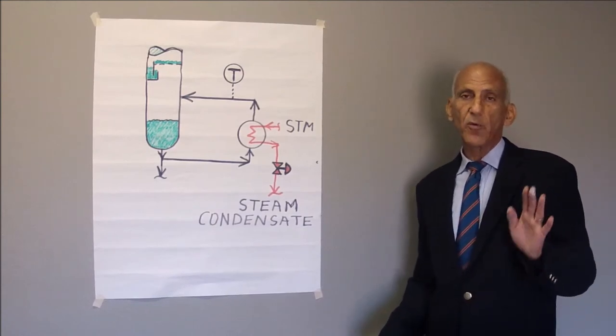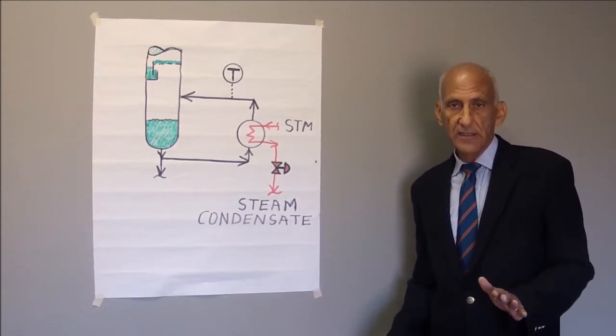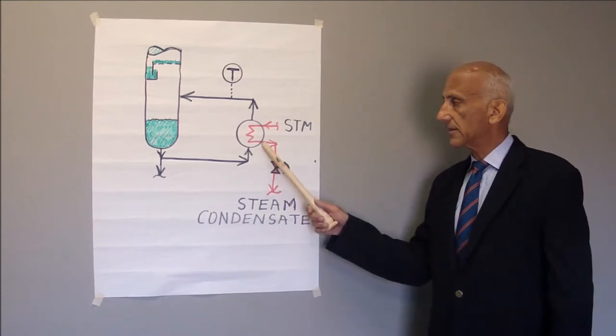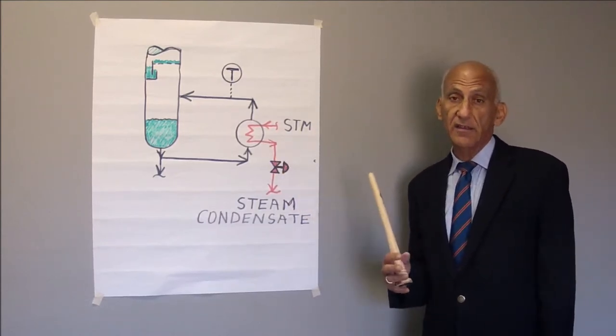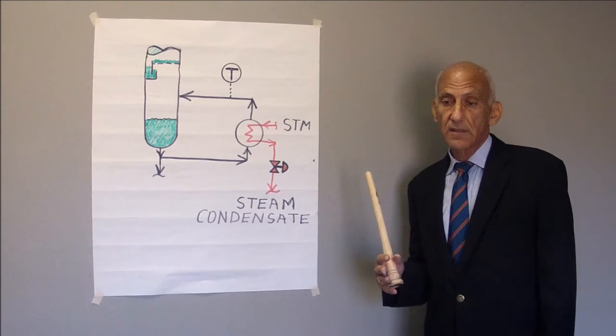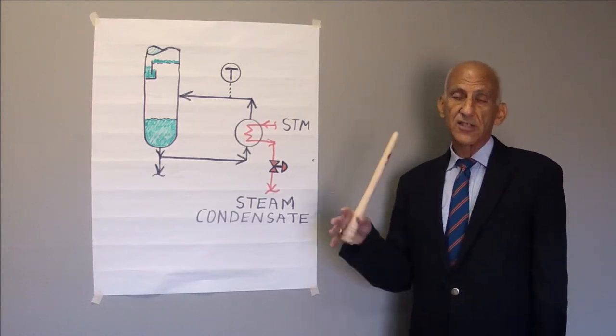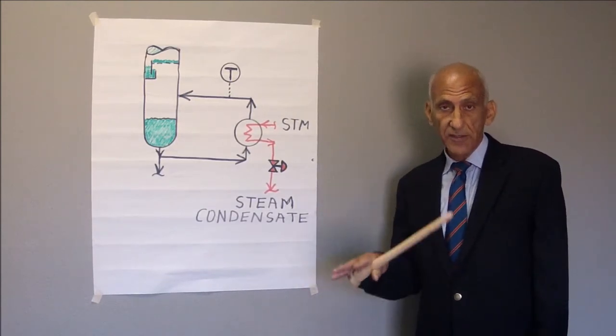And that point is when you blow the condensate seal, which simply means the liquid level in the channel head, which you cannot see, is lost, and the steam and condensate blow out together.